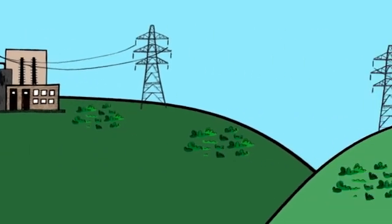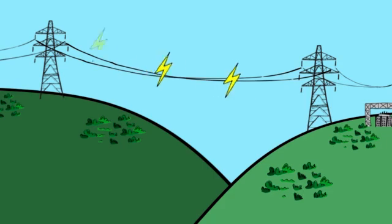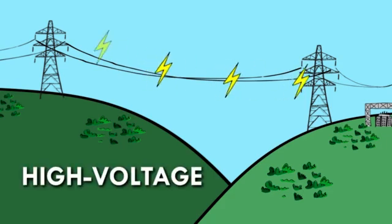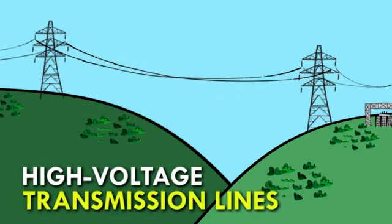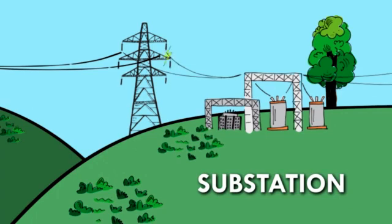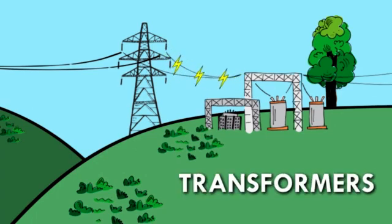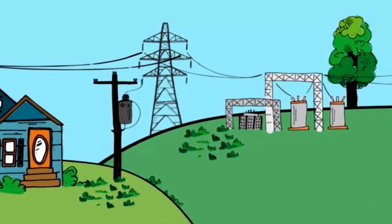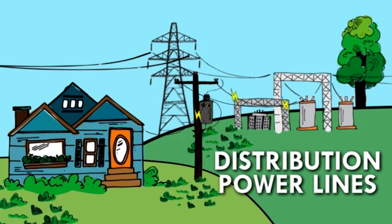The electricity is then sent over vast distances by way of high-voltage transmission lines. The electricity arrives at your co-op substation, where transformers lower the voltage, then send it on to your home using distribution power lines.